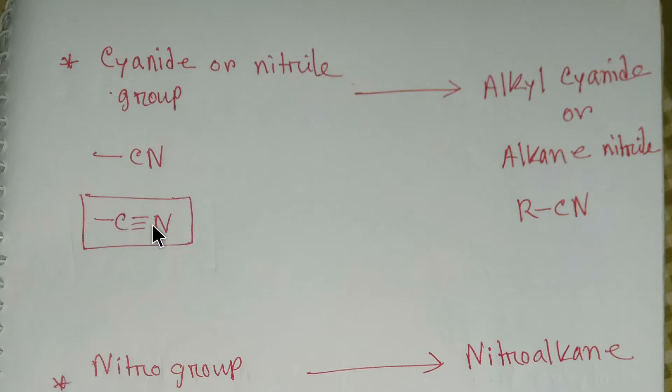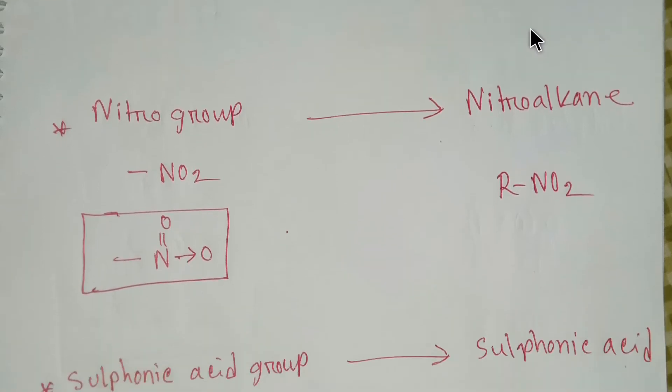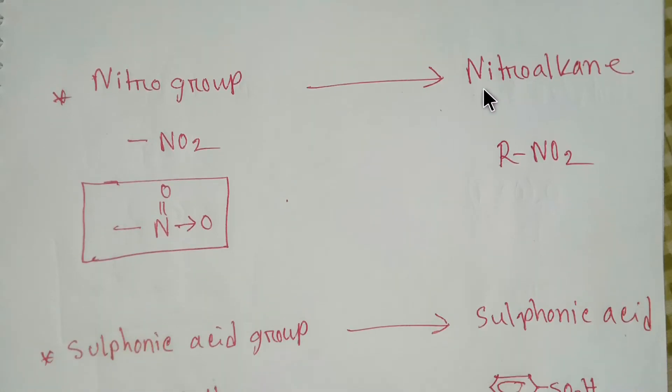We know about nitroalkane. If one hydrogen is replaced by a nitro group from alkane, then we will get nitroalkane, or NO2 can be attached to methyl group, ethyl group, propyl group, etc.